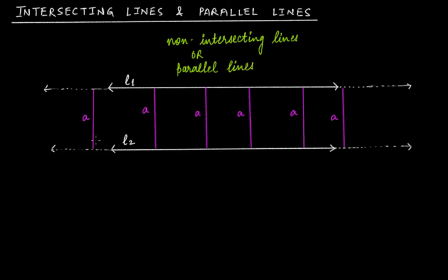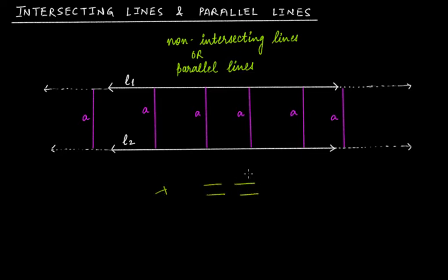Since the distance between these two parallel lines will always remain the same, there is no point whatsoever at which they will intersect. They will never cross each other at any point. Such lines are called non-intersecting lines because they will not intersect or cross each other — they will always remain parallel.